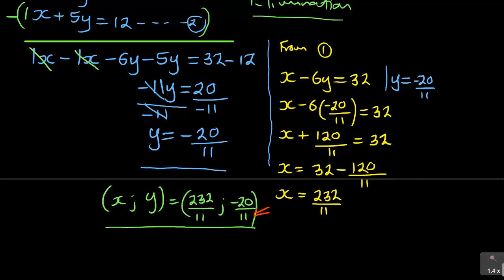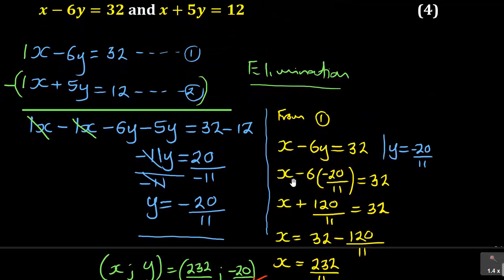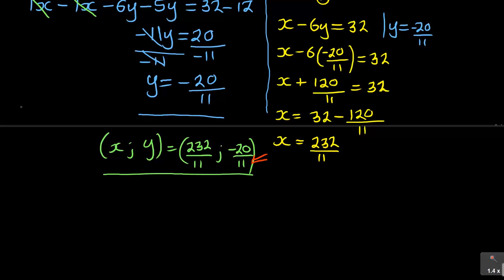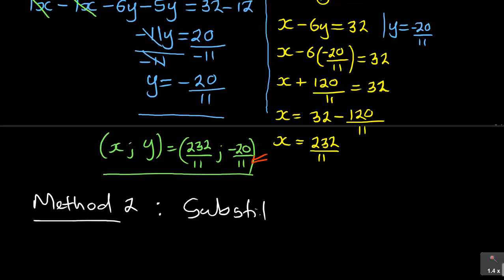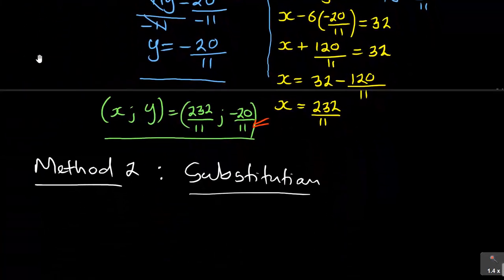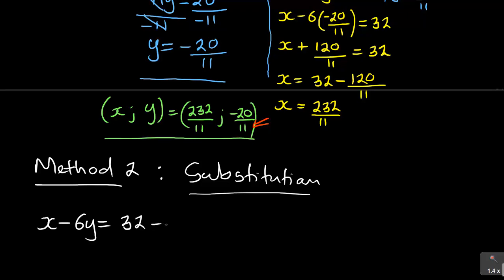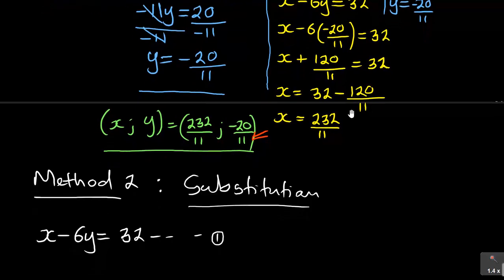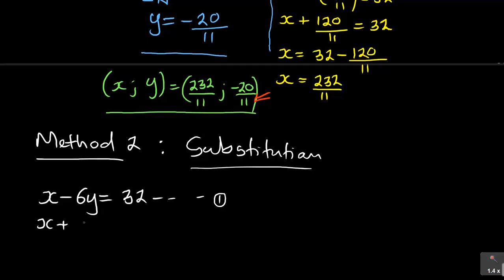Now let us look at method two, where we take the same equations: x minus 6y equals 32 and x plus 5y equals 12. Method two is called the substitution method. The first method was elimination; this method is substitution. So equation 1 is x minus 6y equals 32, and equation 2 is x plus 5y equals 12.